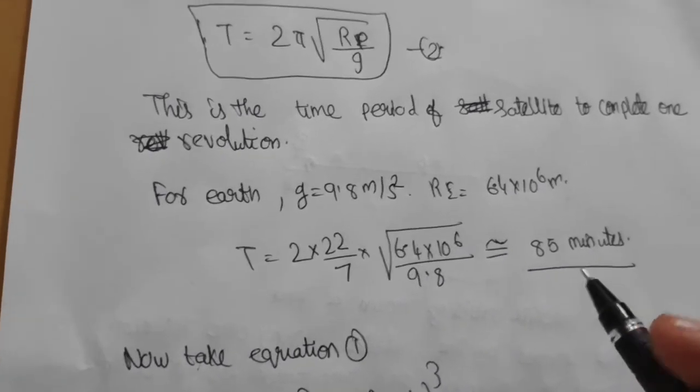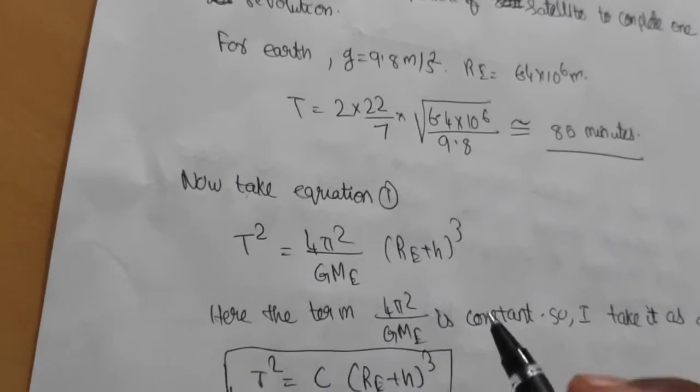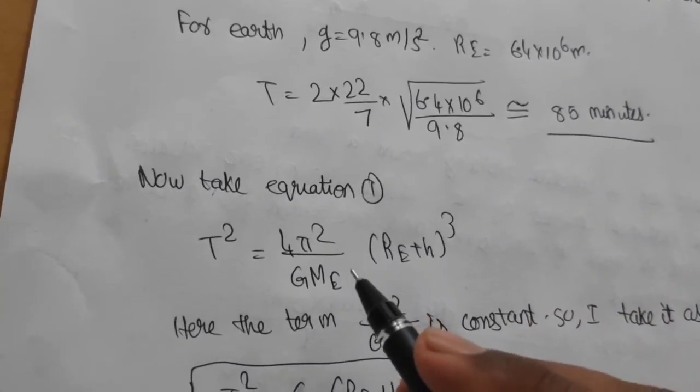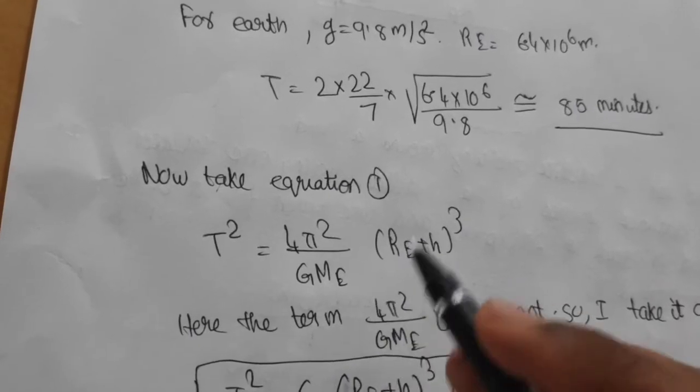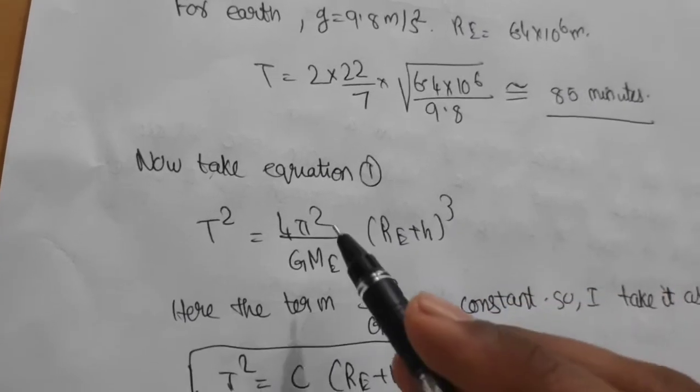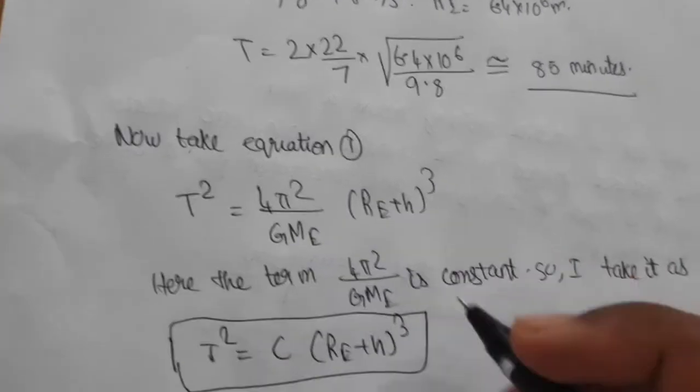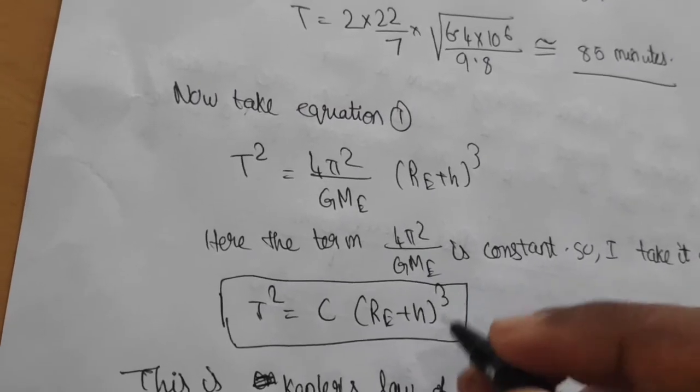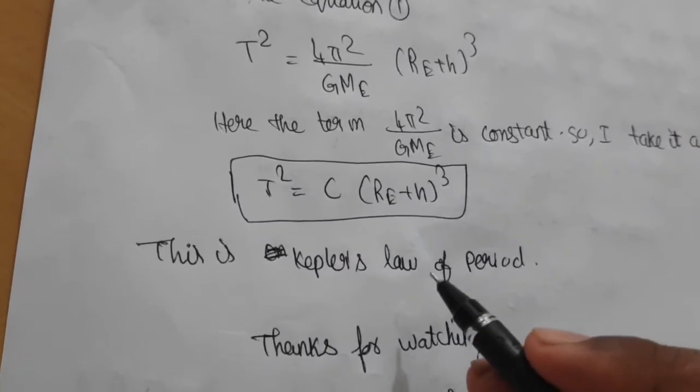Now take the equation T² = (4π²/GMp)(Rp+h)³. The term 4π²/GMp is constant, so we take it as C. T² = C(Rp+h)³. This is Kepler's law of period. This is a proof for Kepler's law of period.